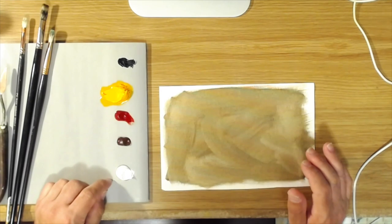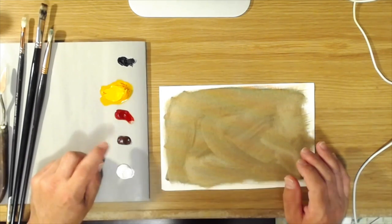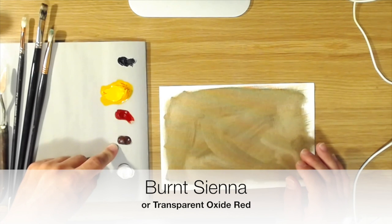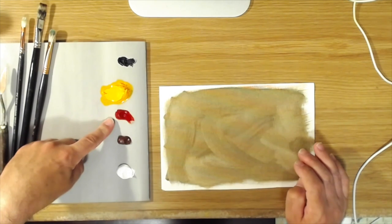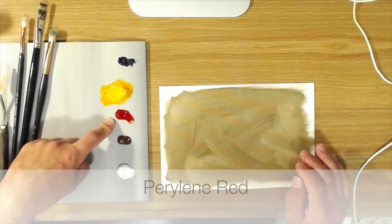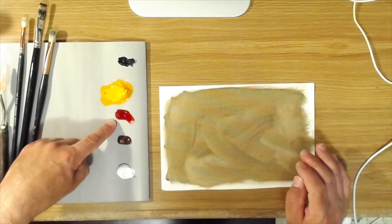So I've got white, just plain old titanium white, burnt sienna. You can also use transparent oxide red. Here I have a color called perylene red. This one is made by Gamblin. It's kind of a cool transparent red.